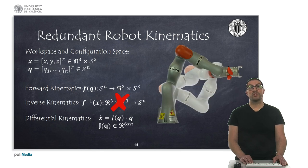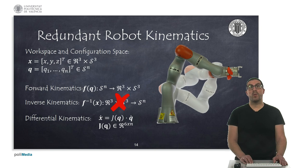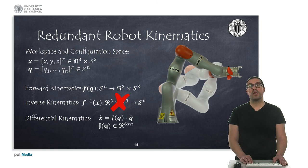Redundant robots are robots with seven or more degrees of freedom. In the case of serial manipulator robots like the one shown here, we can easily obtain a direct kinematic model using analytical methods such as the Denavit-Hartenberg method. However, we cannot obtain an inverse kinematic model in closed form, since there are infinite solutions. Usually, numerical methods are used in order to solve this inverse kinematic problem, and these methods are usually based on the pseudo-inverse of the Jacobian.